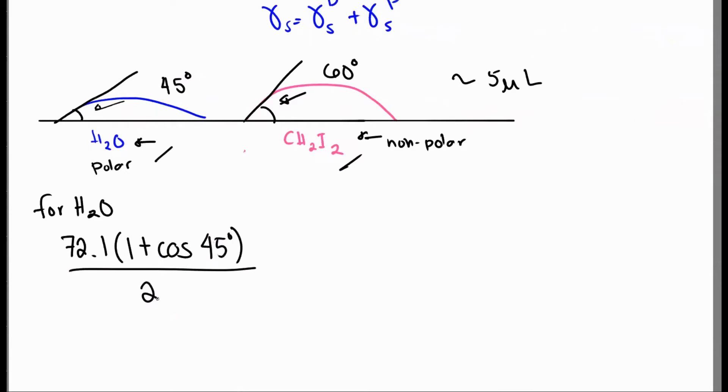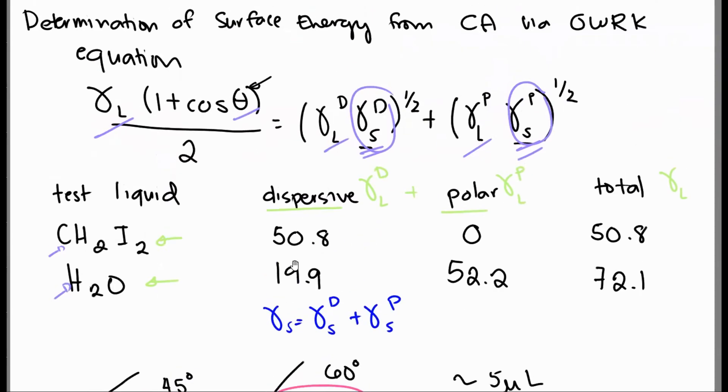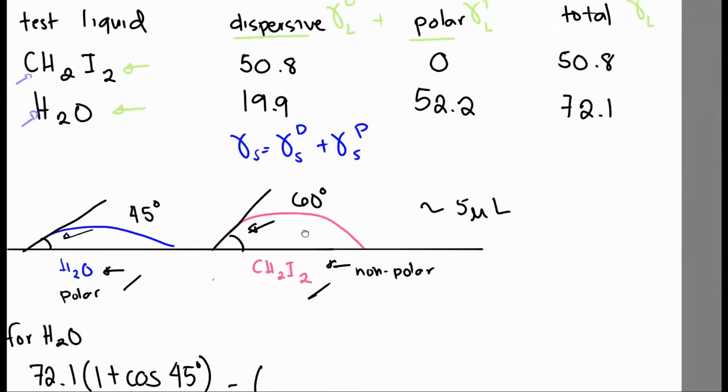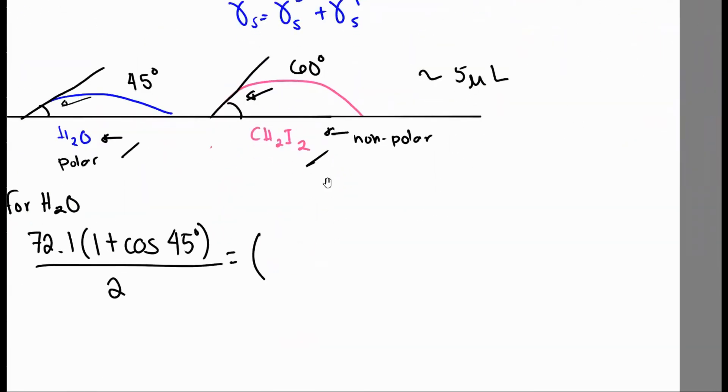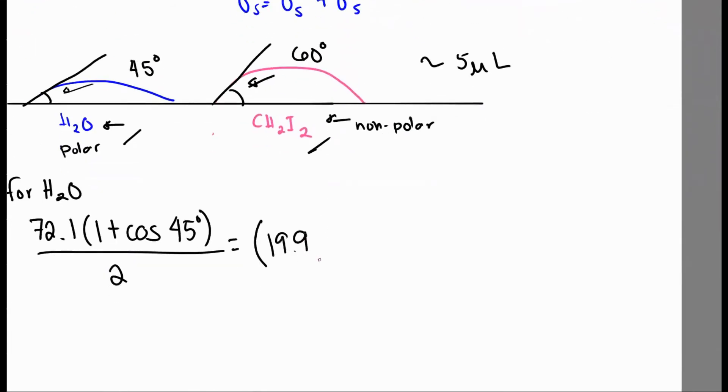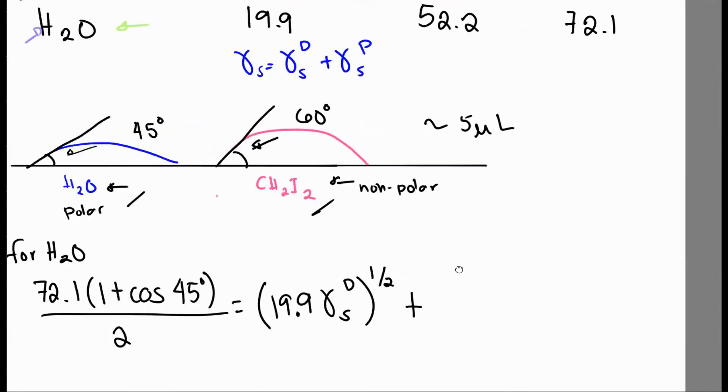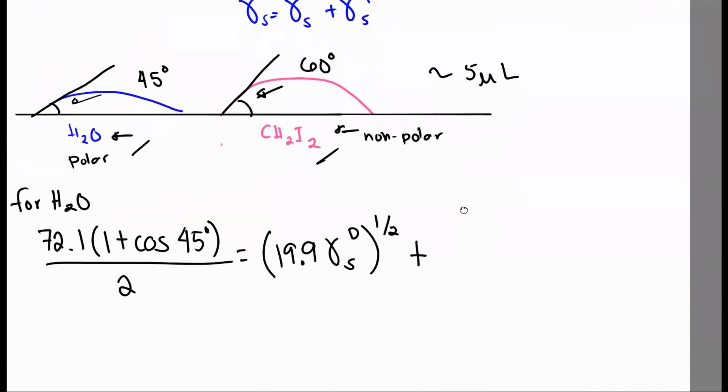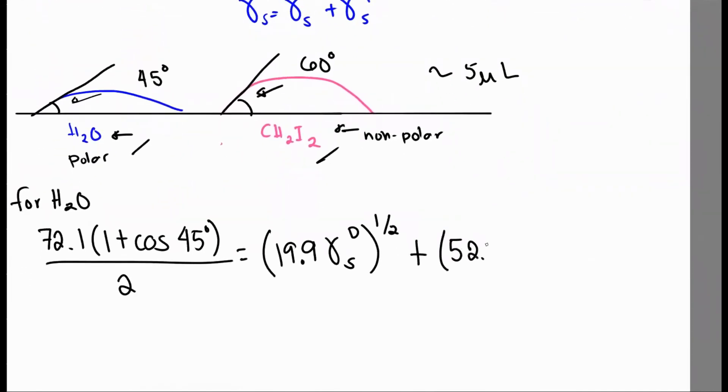We have gamma-L for water is 72.1, so 72.1 times 1 plus cosine, the contact angle here, which is 45 degrees, over 2 is equal to water dispersive component is 19.9, so 19.9 times gamma-Sd, we don't know this, raised to 1/2 plus polar component of water, 52.2, times polar component of the solid, gamma-Sp, we don't know this, raised to 1/2. So that is for water.